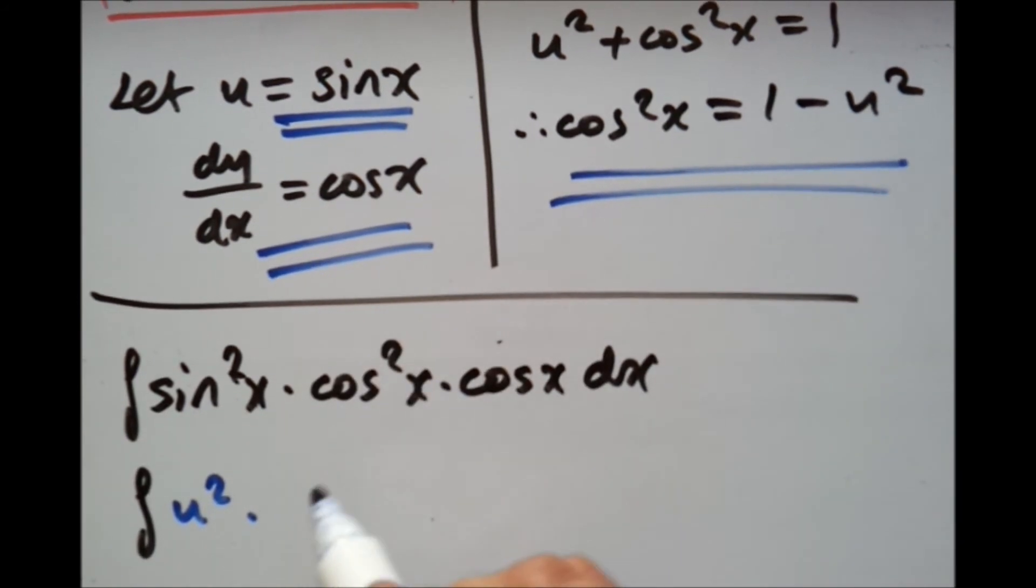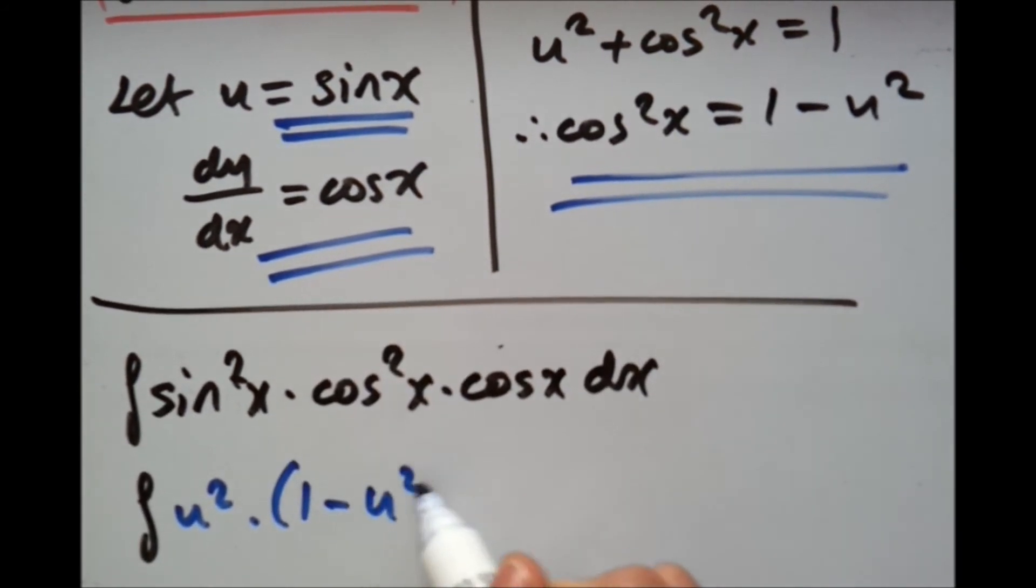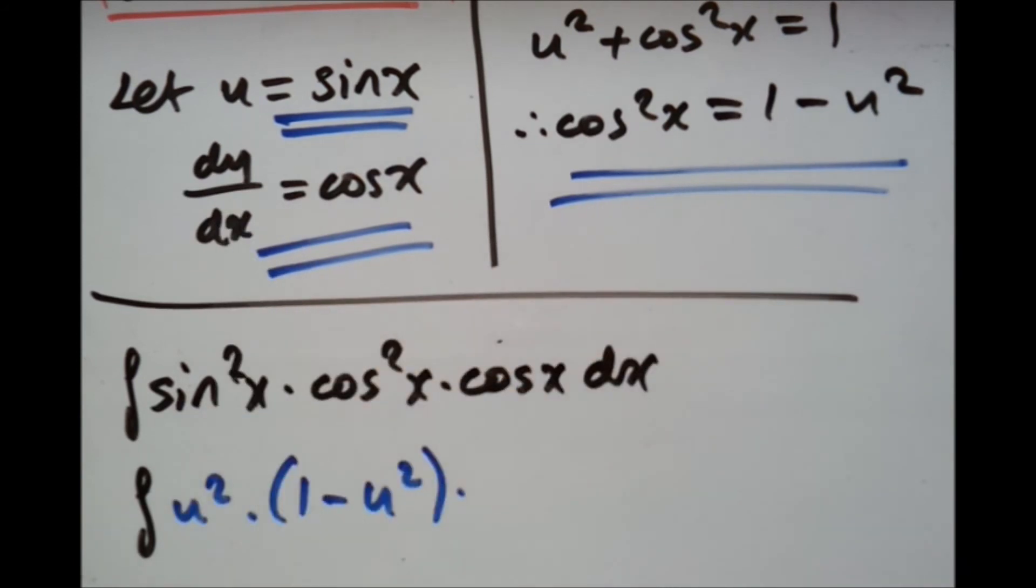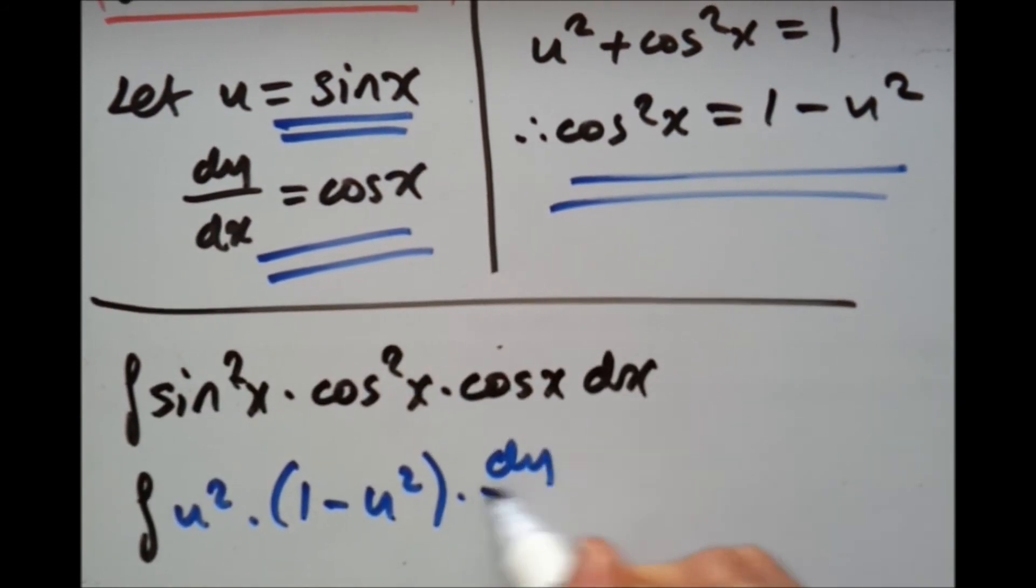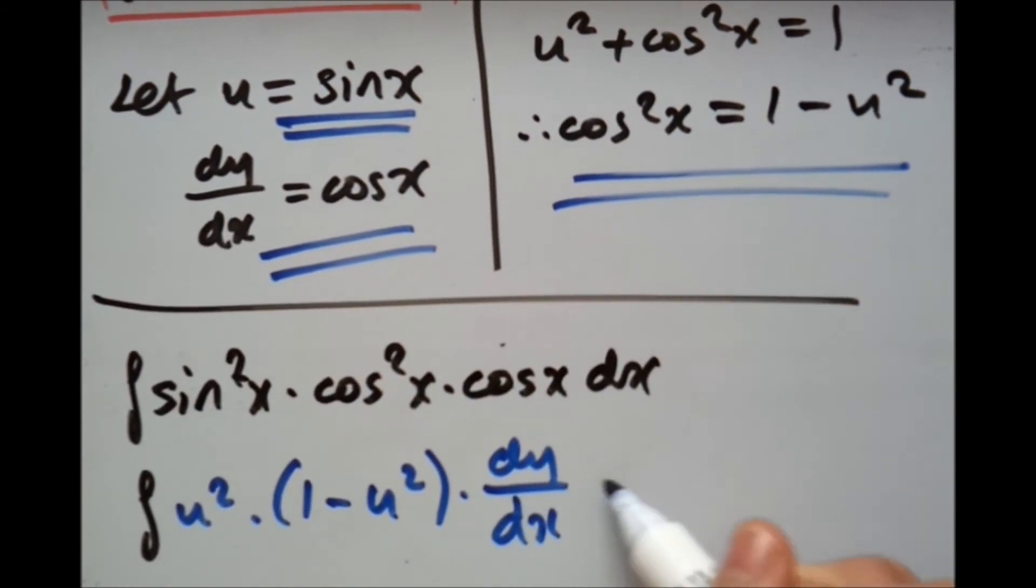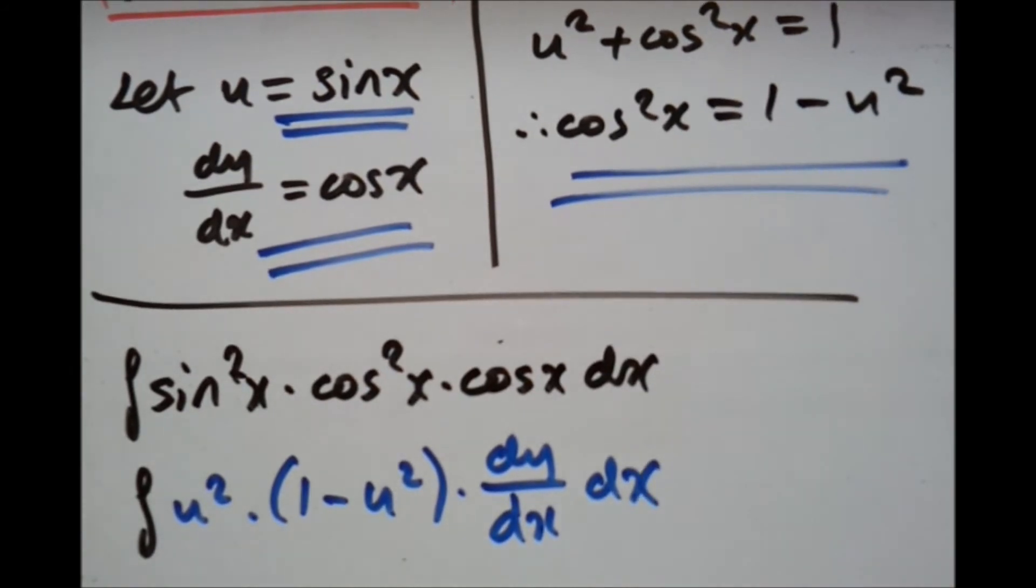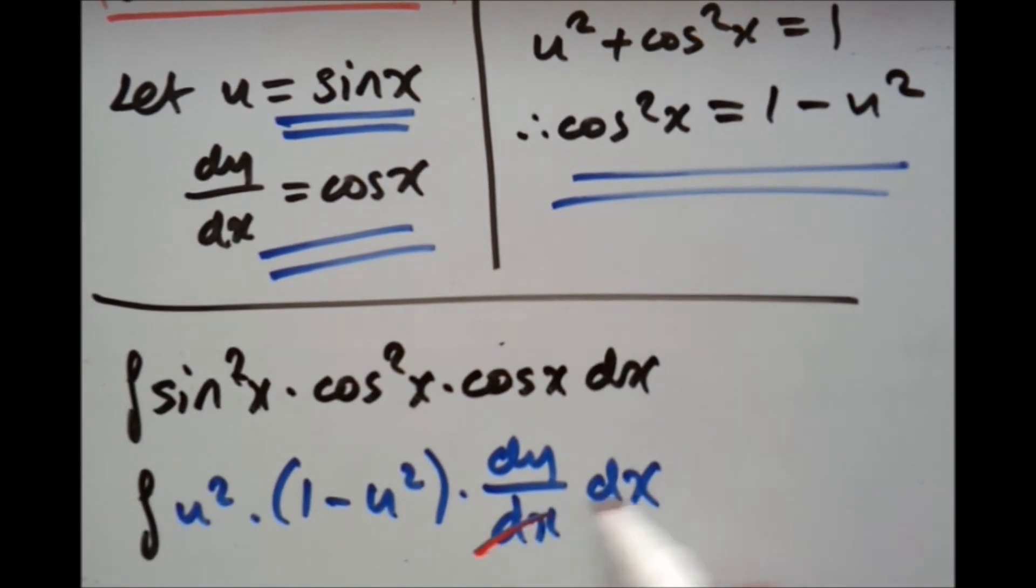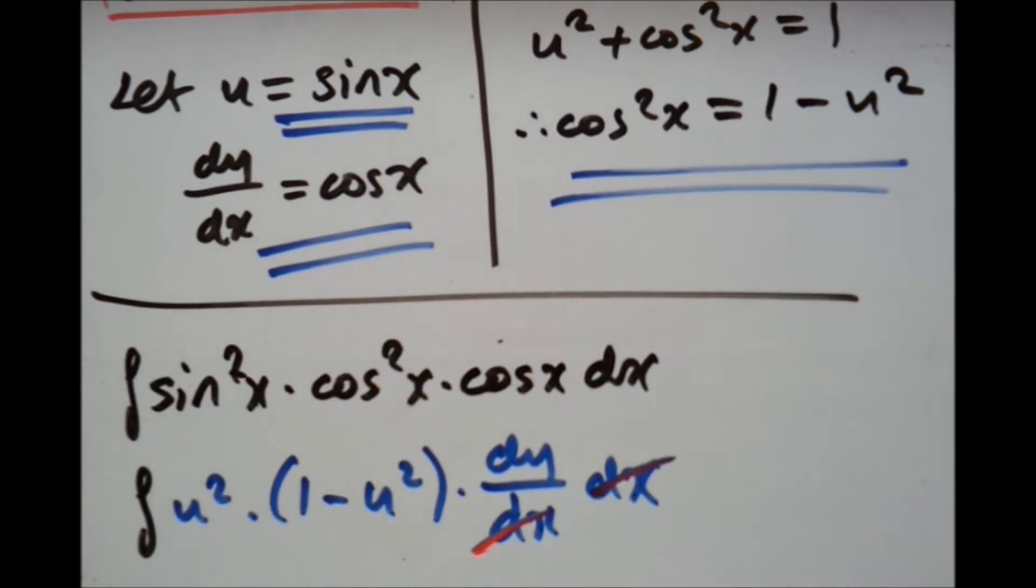So let's substitute this back in. So we're going to have 1 minus U squared. Now cos x would simply be du over dx times dx. Cross sum out. And that's it.